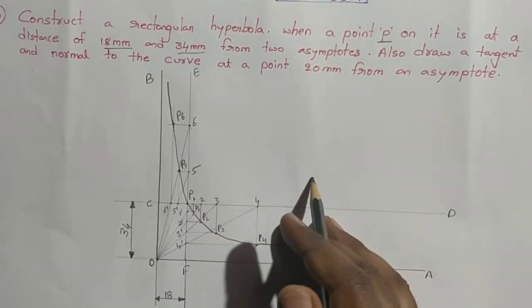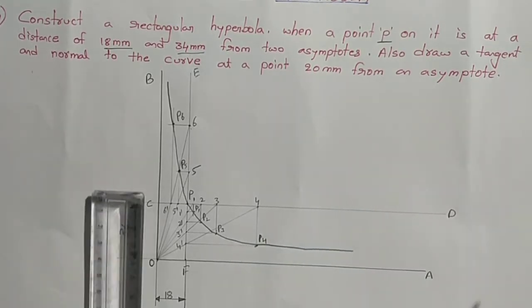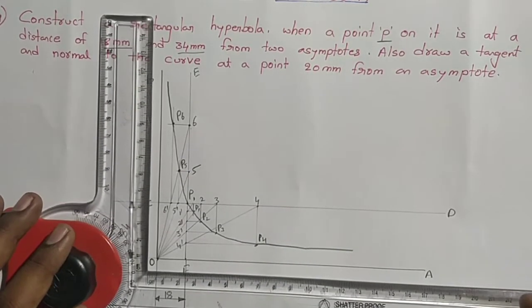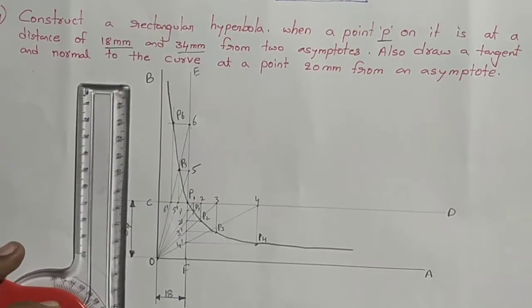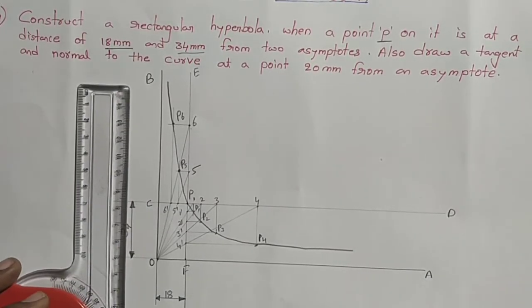The curve is known as rectangular hyperbola. The curve passes through point P1, P2, P3, P4, P5, P6, and through point P.